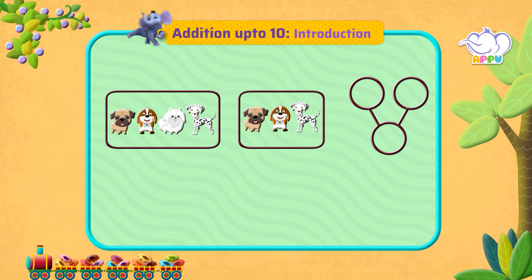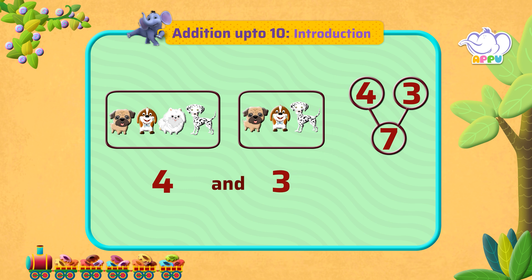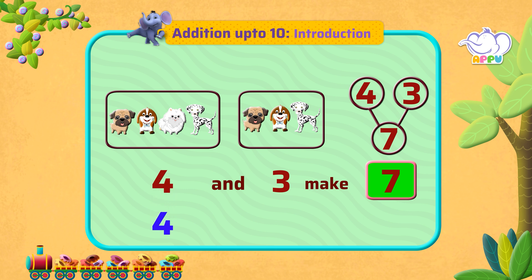We have learned simple addition of two numbers. Let's look at an example. Here we have four puppies, and here we have three. How many dogs do we have all together? Four and three make seven. We have seven dogs all together, so this can also be written as four plus three equals seven.